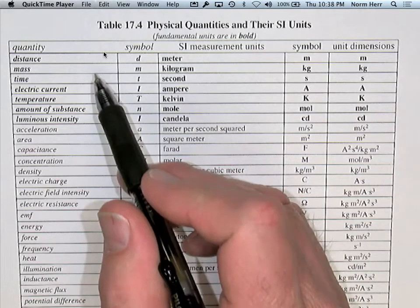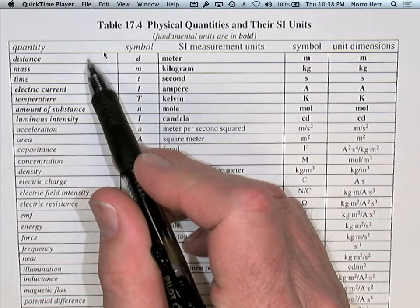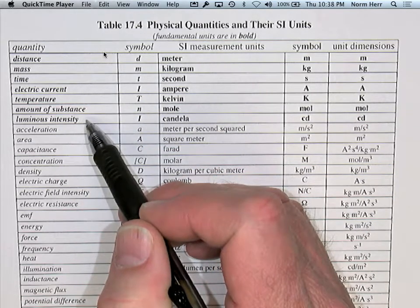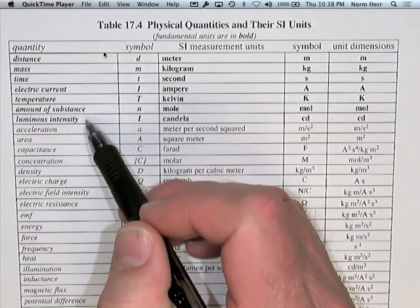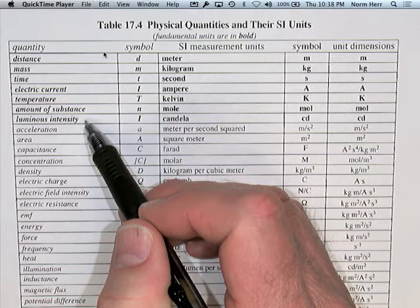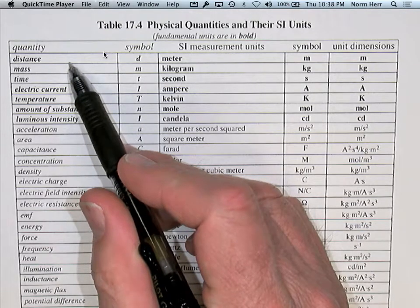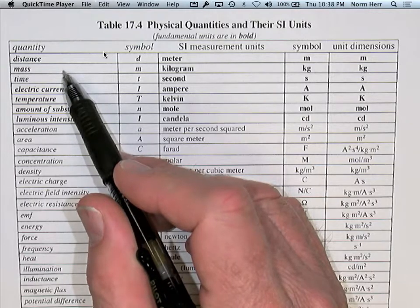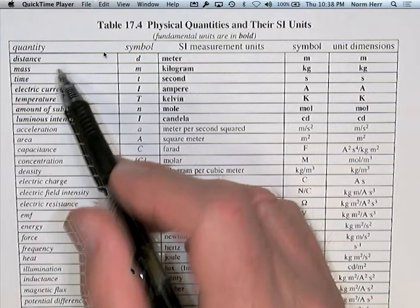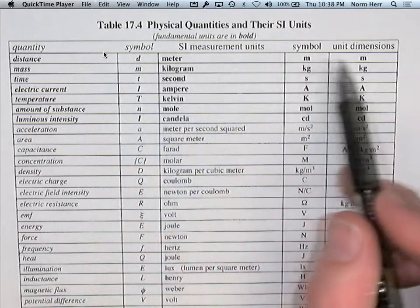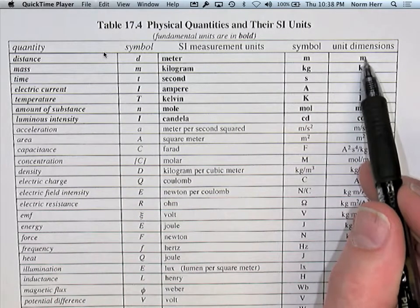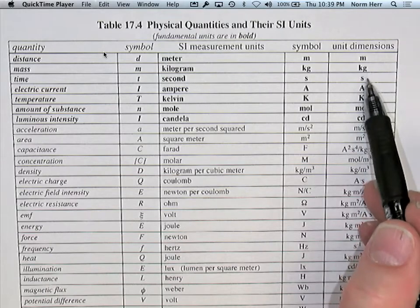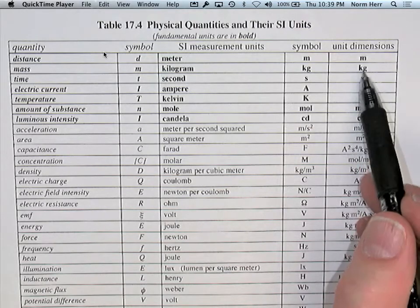When you look at the table, you're going to notice that the first seven items are in bold, because these are the fundamental units. They can't be expressed in any more fundamental terms than themselves. For example, distance cannot be expressed in any more fundamental terms than distance, and mass cannot be expressed in any more fundamental terms than mass. The unit dimensions in SI units are meters, kilograms, seconds — simple units by themselves.